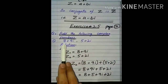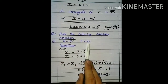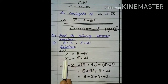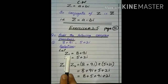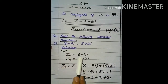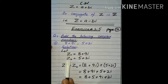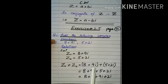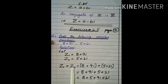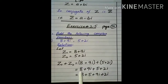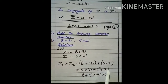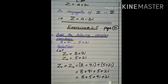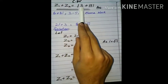The first question: we have to add the following complex numbers. Here we have two complex numbers: 8 plus 9 iota and 5 plus 2 iota. We have to add them, so Z1 plus Z2. We arrange 8 plus 5, plus 9 iota plus 2 iota. Z1 plus Z2 is equal to 8 plus 5.